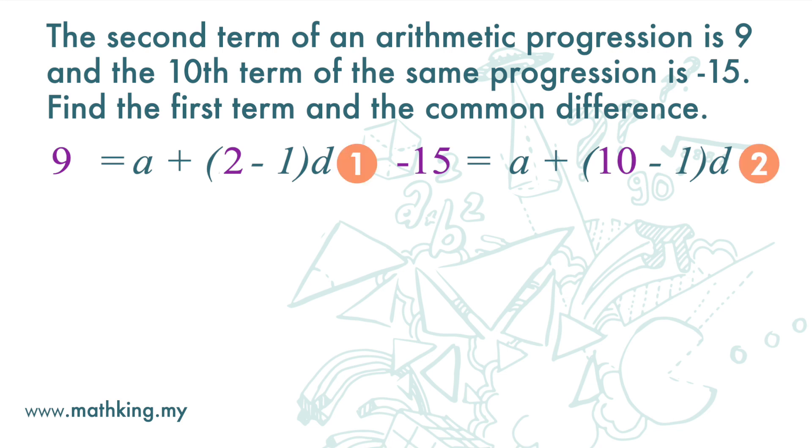We are going to use the elimination method. We rewrite the first equation and subtract it from the second equation. Negative 15 minus 9 is negative 24. A minus a is 0. 9d minus d is 8d. And we get d equals negative 3.